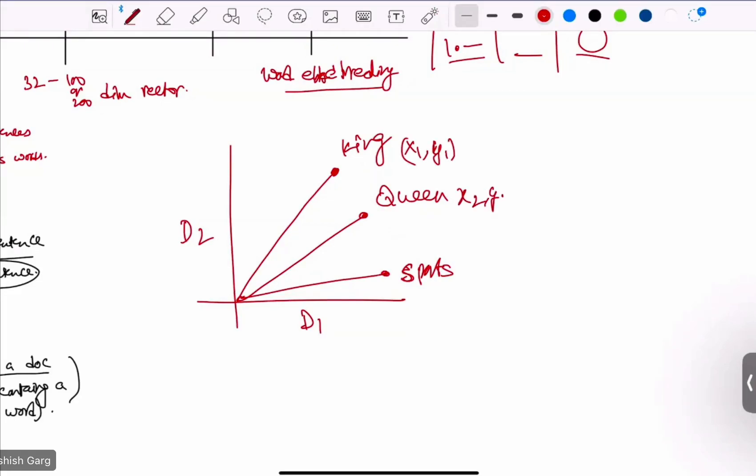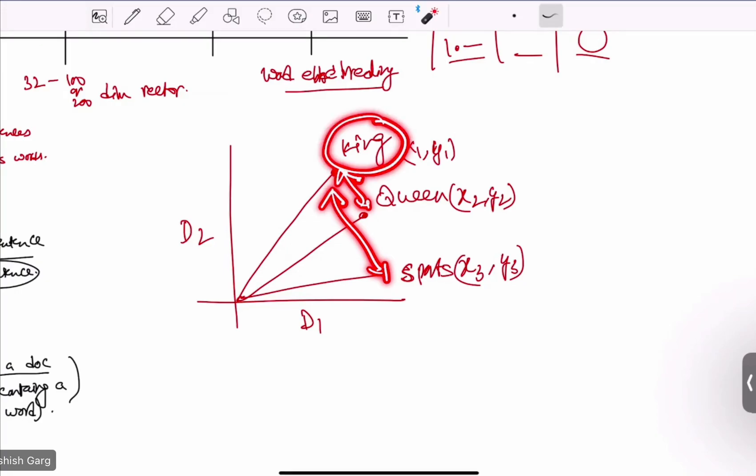Here x2, y2. Here x3, y3. Just find the Manhattan distance between these two points. The distance between King and Queen will be less than distance between King and sports. So the most similar word to King is Queen, not sports.